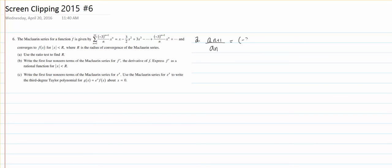it'll become negative 3 to the n minus 1 plus 1 over n plus 1 times x to the n plus 1, and then divide it by the regular equation, so negative 3 n minus 1 over n x to the nth power.